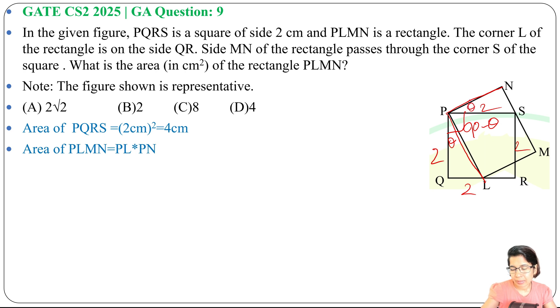Now in triangle PQL, cos theta will be PQ divided by PL. So from this we can say PL equals PQ divided by cos theta. What is PQ? PQ equals 2.